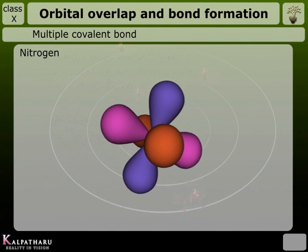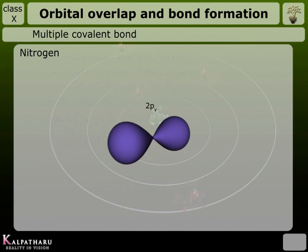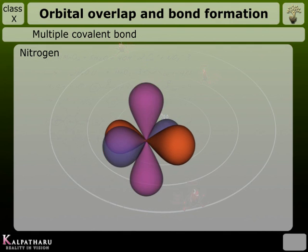There are three unpaired electrons, one each in 2pₓ, 2pᵧ, and 2pᵤ orbitals.